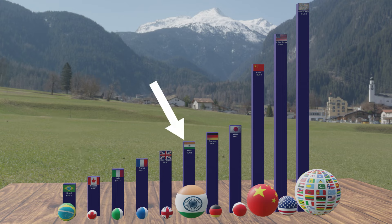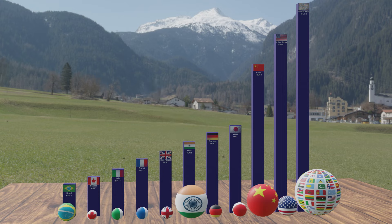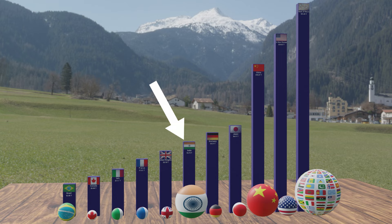Despite being an emerging economy, India has managed to achieve a larger GDP than several developed nations, including the United Kingdom. With a GDP of over 3.7 trillion USD, India ranks above the UK in terms of total economic output, despite the UK's advanced economy. This highlights the remarkable scale and growth pace of India's economy.